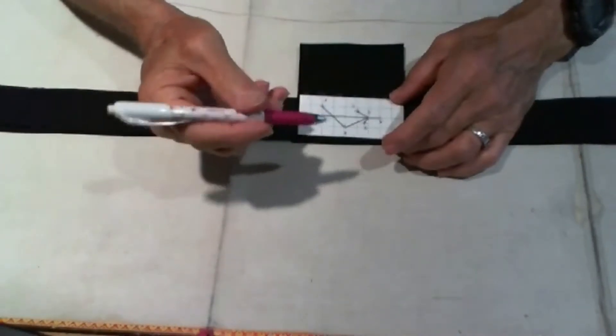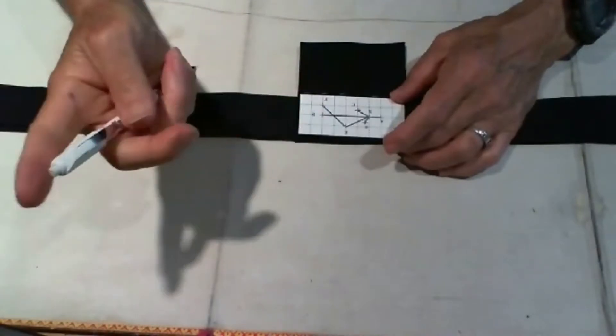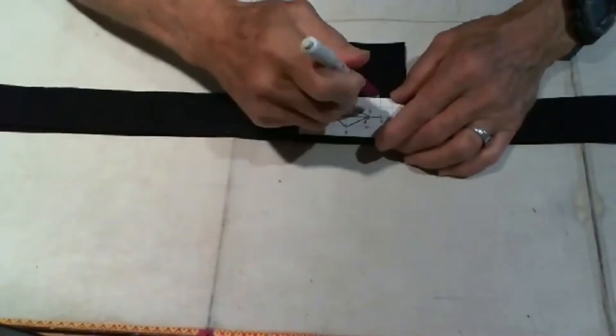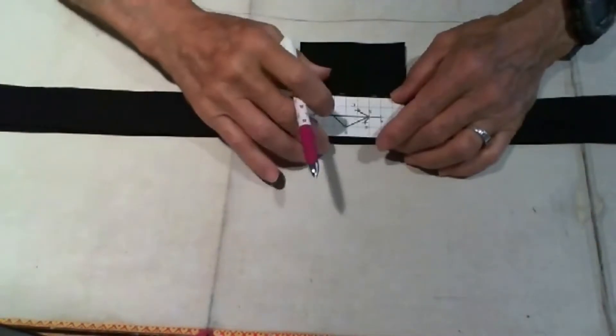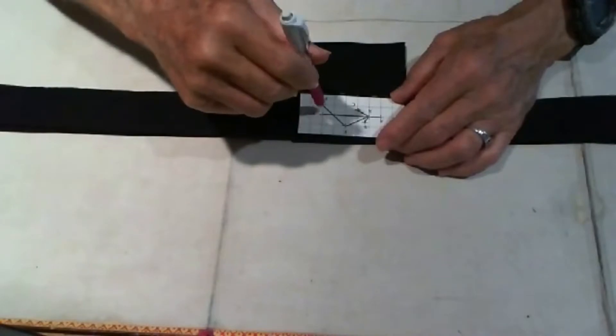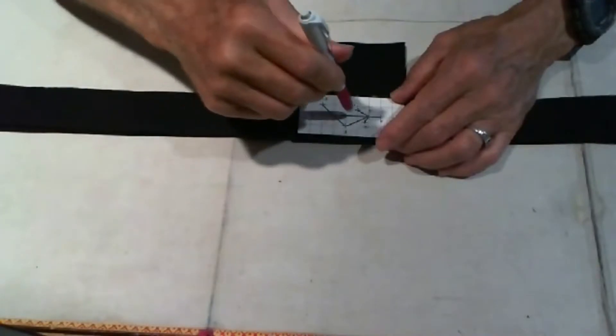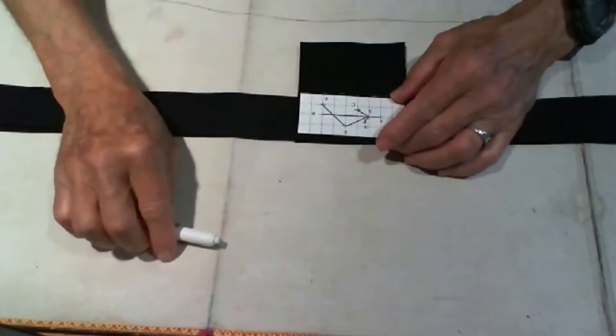With the ceramic pencil, we go through the holes that we've punched. I've already done it, and you mark where each of the holes will be.